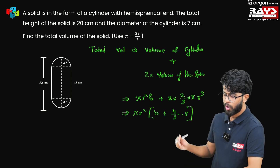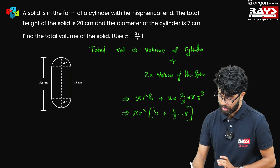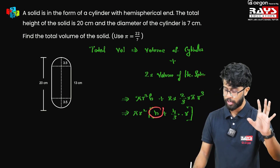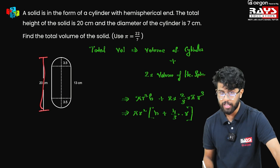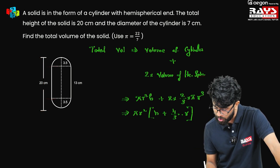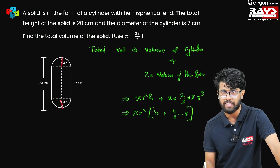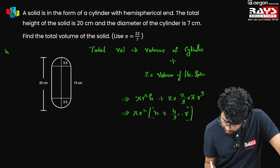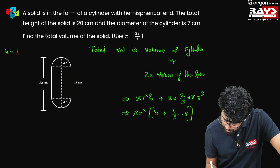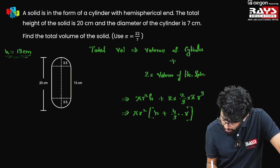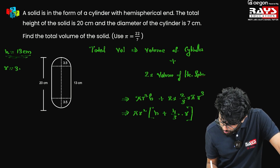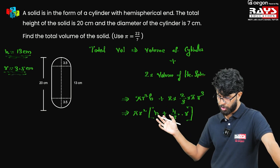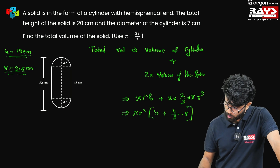Now as we already know the height and the radius, let's substitute. Please keep in mind that this height is the height of the cylinder, not the height of the solid. The height of the solid is given as 20 cm, but the cylinder is only the middle portion. We have to cancel out 3.5 from both ends, that is 7 in total. So 20 minus 7 gives us 13 cm as the height of the cylinder, and radius is 3.5 cm.